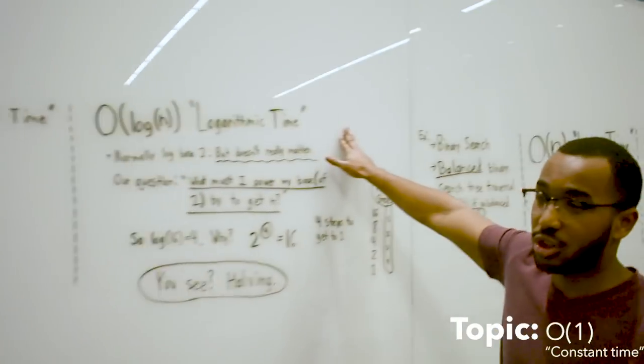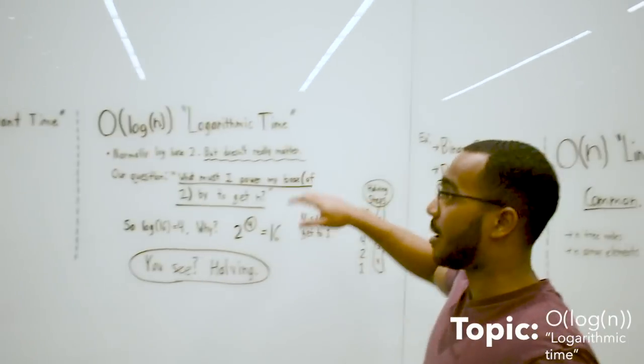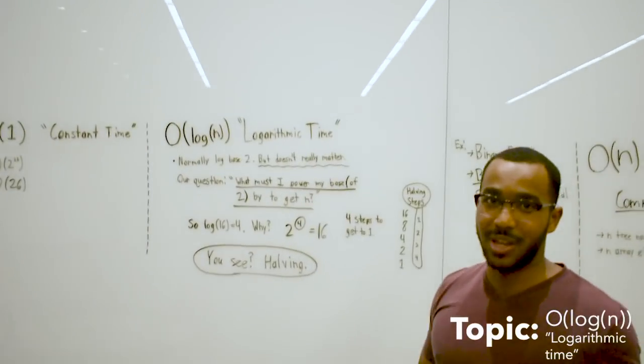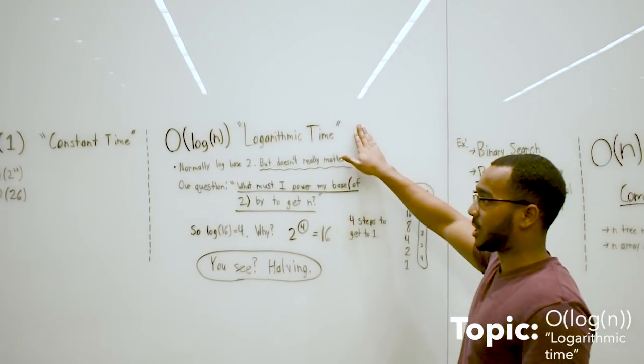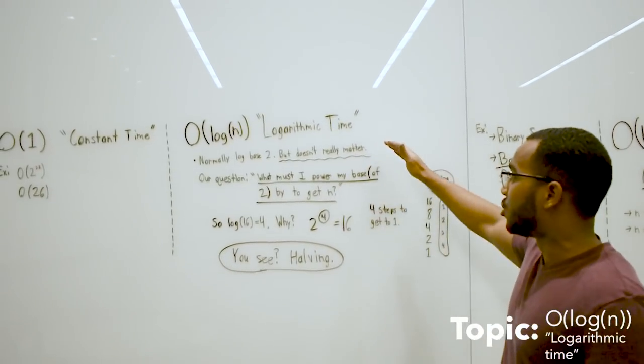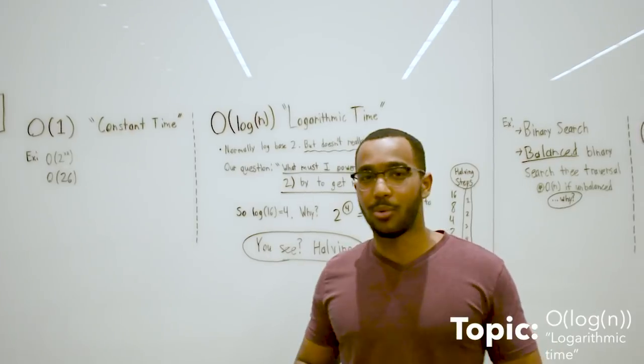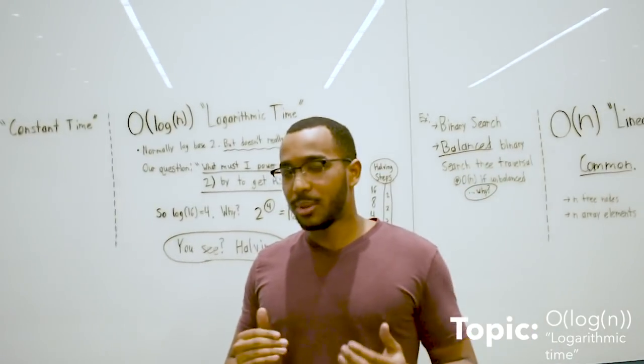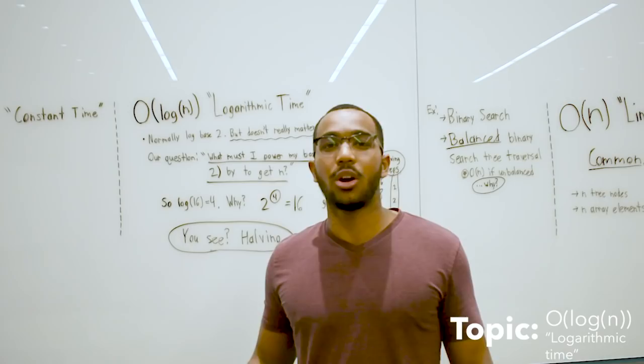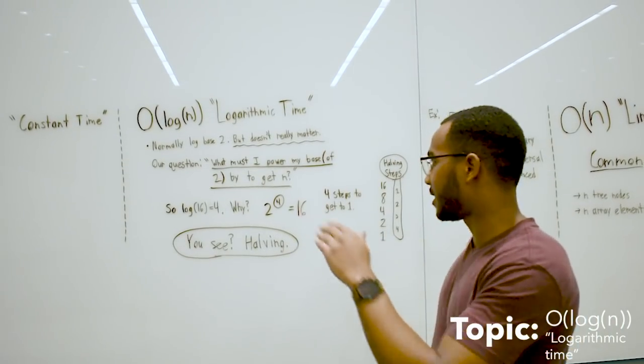Then we get to log n time. This is something that really confused me because I wasn't good at logarithms when I took calculus. We call this logarithmic time. Normally it's base 2, but we care about the behavior. This is the number one thing I have to stress. Logarithmic behavior looks like a logarithm, and it grows kind of like this.